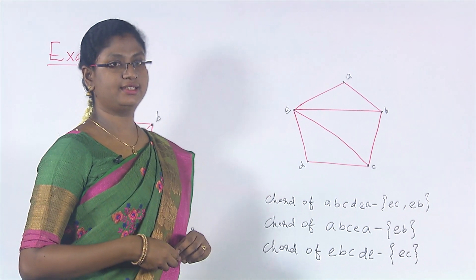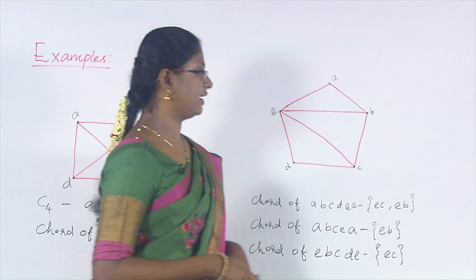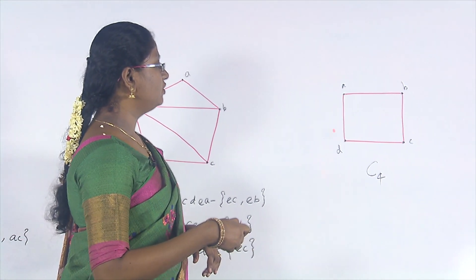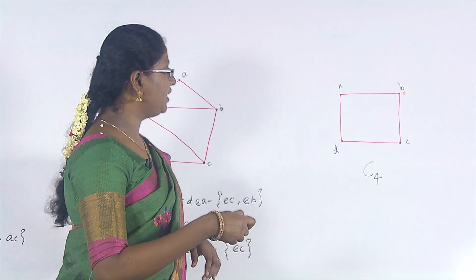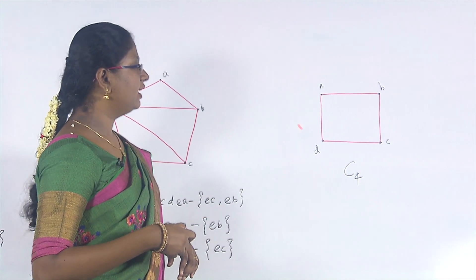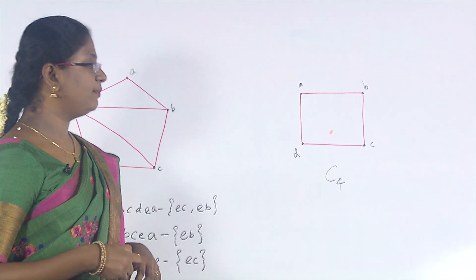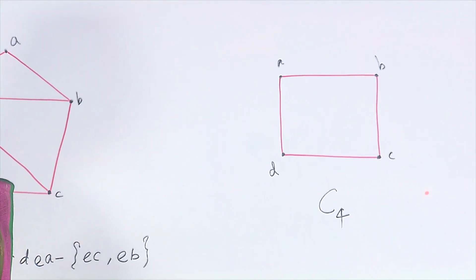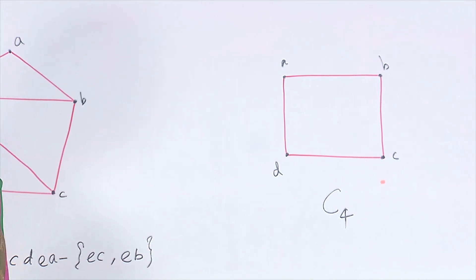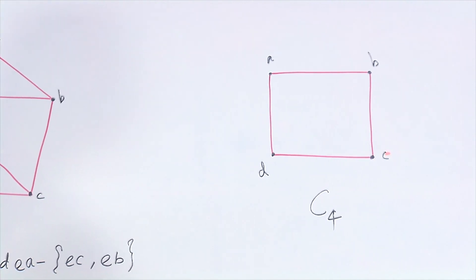From the definition itself, we can say a cycle is not a chordal graph. For example, consider the cycle C4. C4 is a cycle, and we have a cycle of length 4 on vertices A, B, C, D, A. But here we cannot find a chord, which means we have a cycle of length 4 but it does not have a chord. So this is not a chordal graph. C4 is the smallest graph that is not a chordal graph.